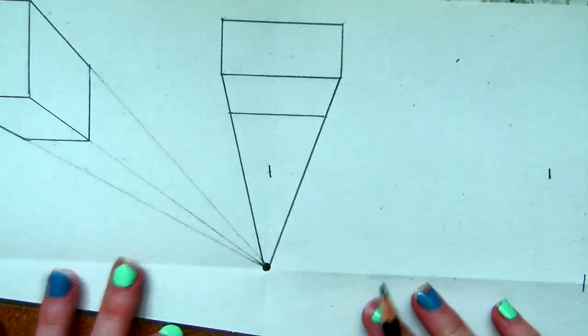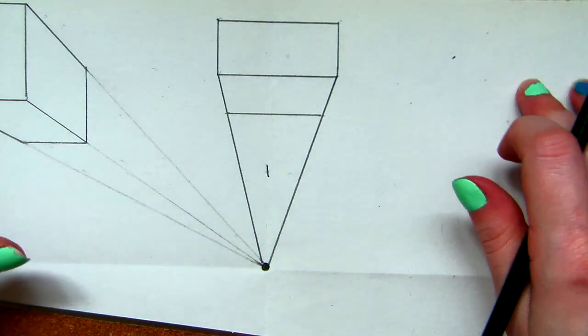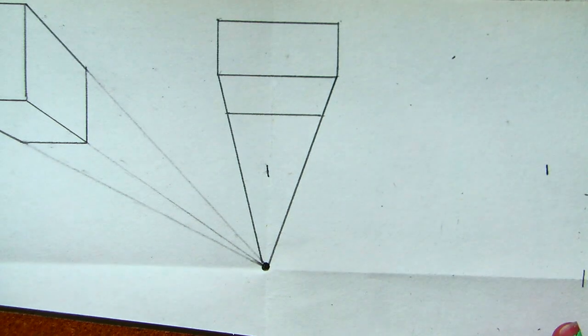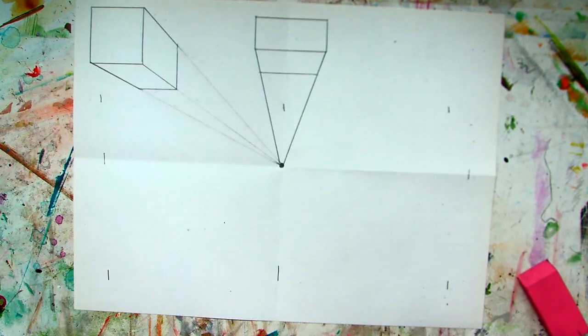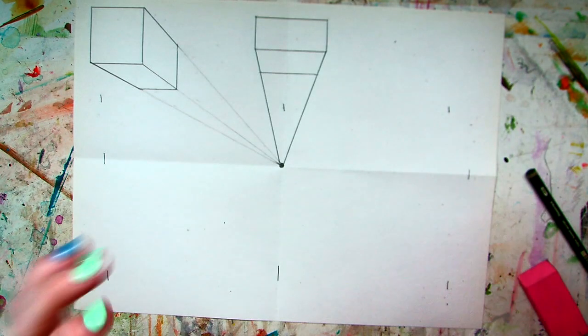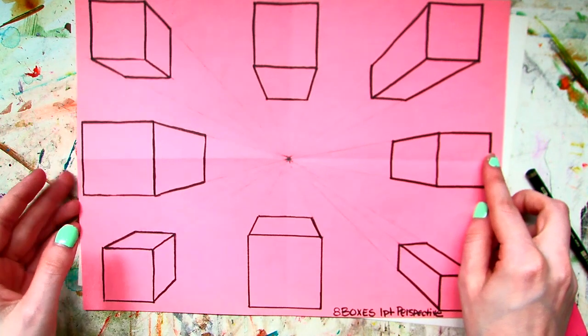Now, I want you to continue this for all eight boxes. So, that in the end, you have eight boxes on your piece of paper. So, in the end, your paper should look like this.